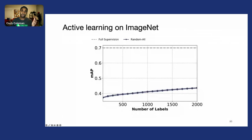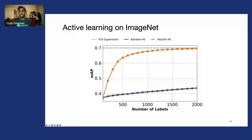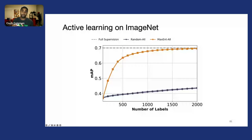Looking at random sampling or passive learning, with 2,000 labels we don't get to a reasonably high accuracy. But if we do something like max entropy uncertainty sampling over all of the data, we can very quickly get to close to full supervision with just a very small fraction of the data.